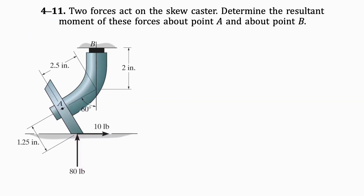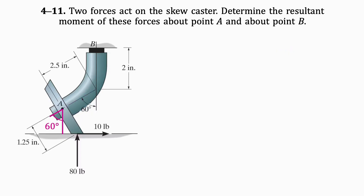First, we will redraw the given 60-degree triangle in pink and shift it to the bottom left corner of the image. Knowing that the total angles should add up to 90 degrees, we can draw another green triangle with an inner angle of 30. We will use this triangle to help us find the x and y distances of the forces from point A.